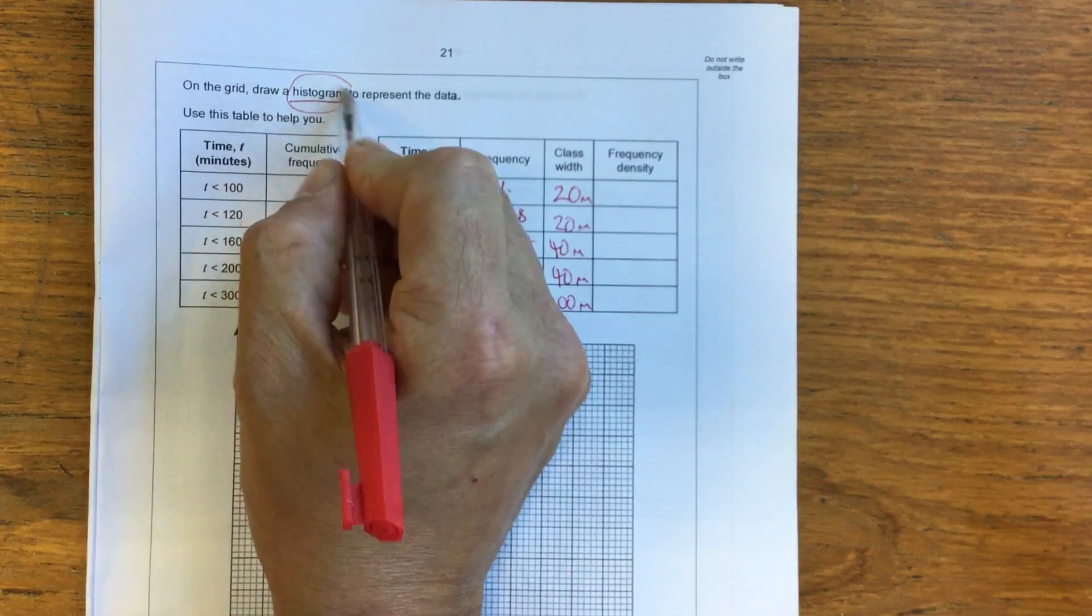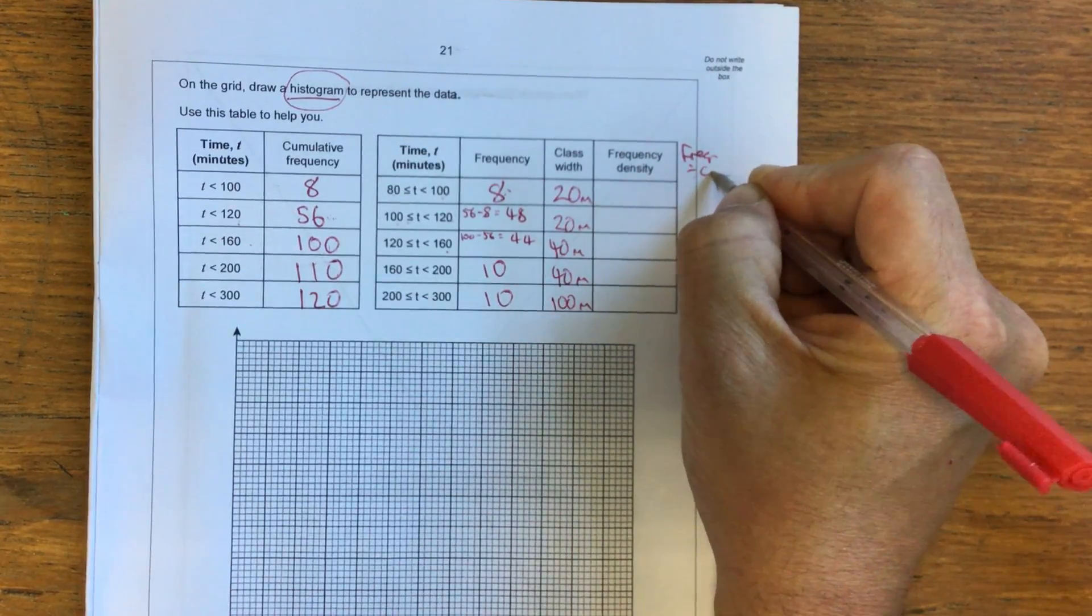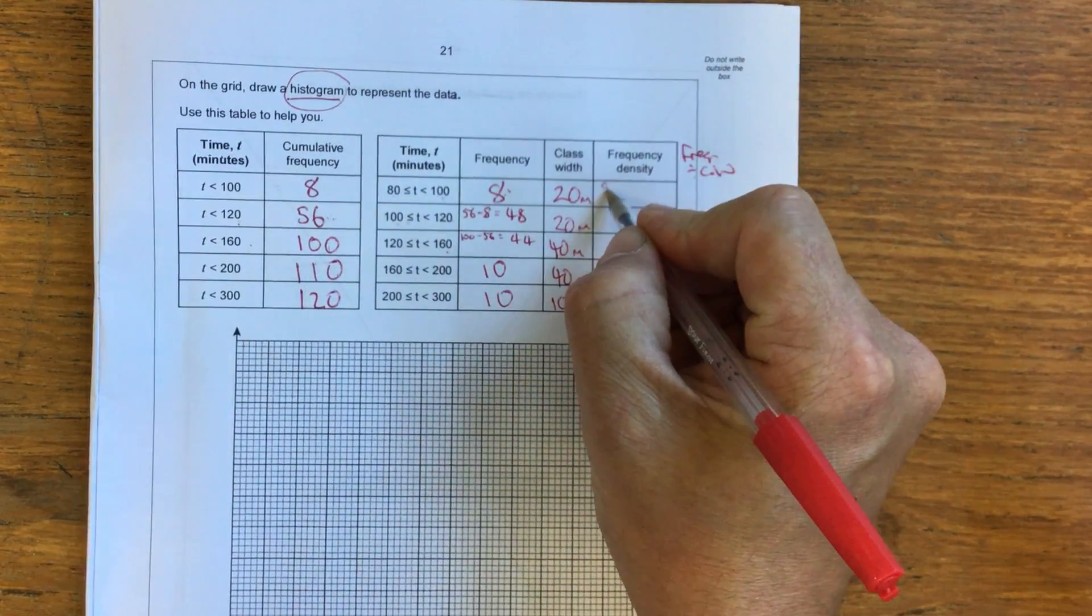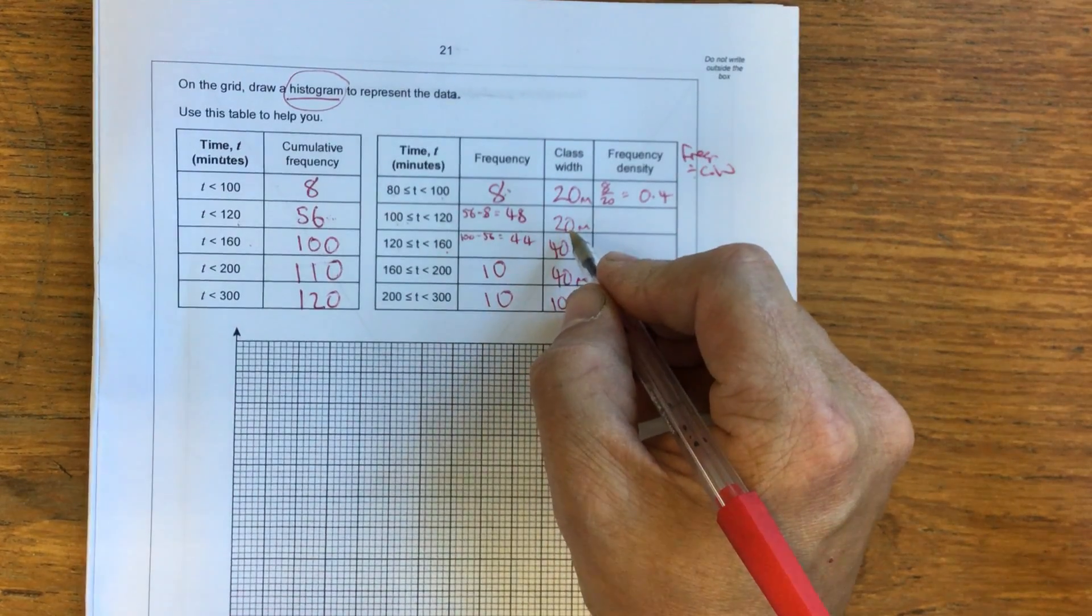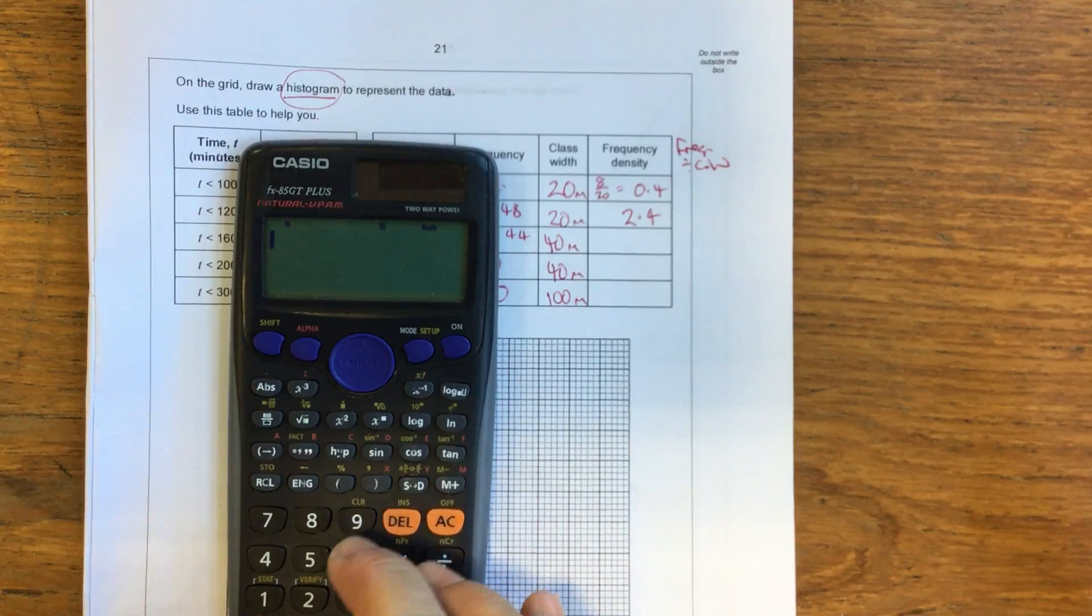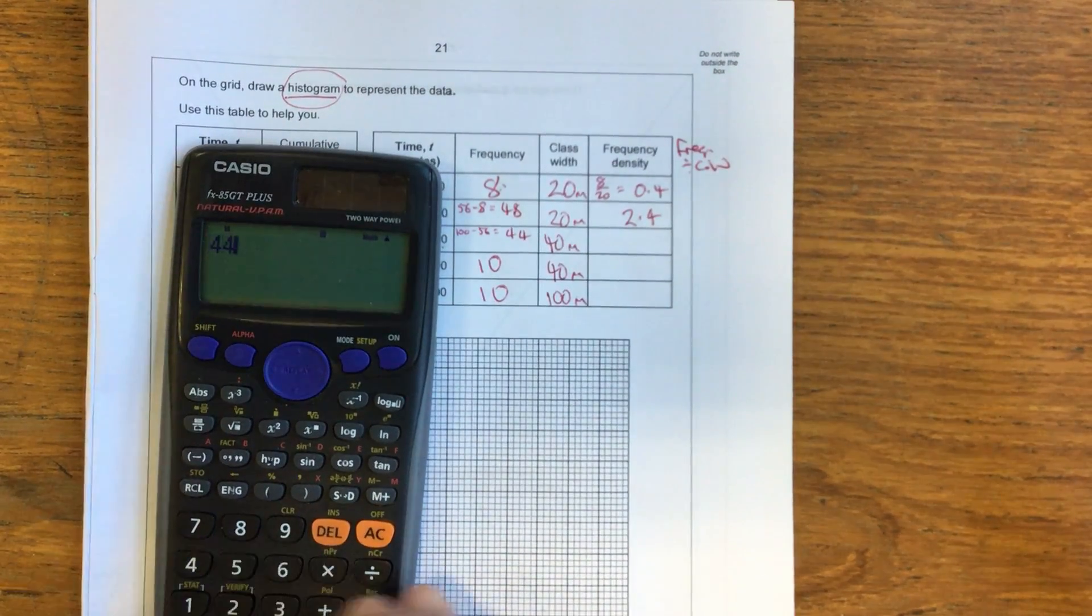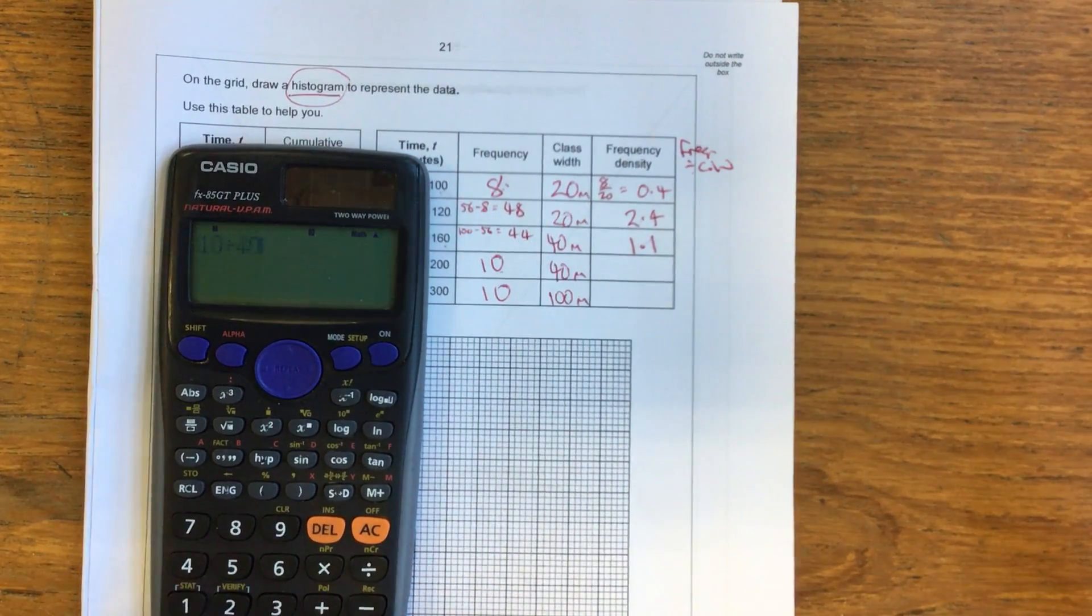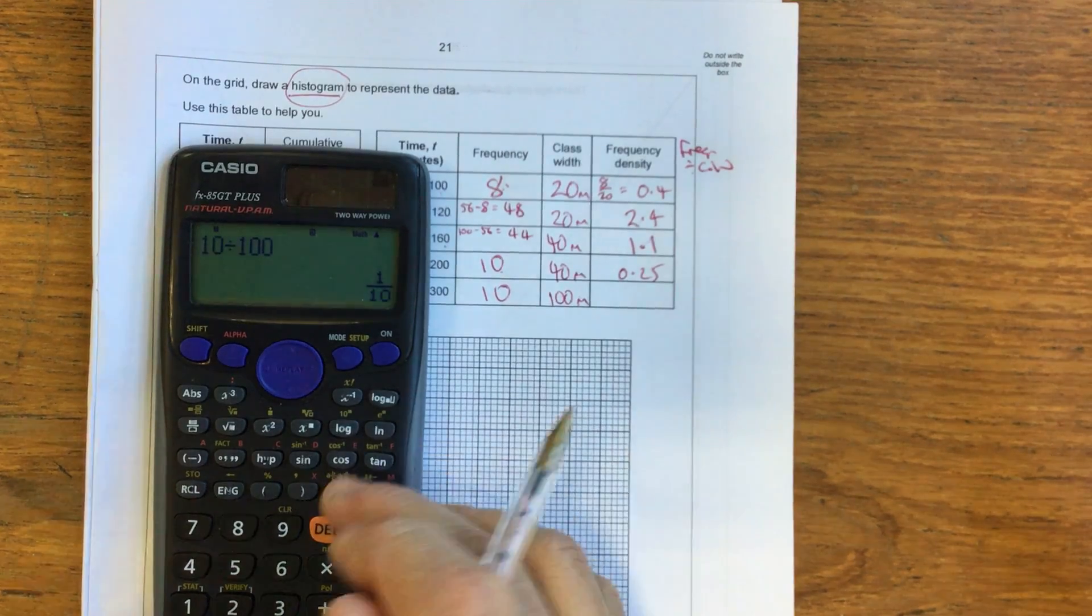Now, frequency density is something that you need to draw a histogram. And you get your frequency density by doing your frequency divided by your class width. Now, be careful. You don't want to write outside your margin when you do an exam, because this won't be included. I'm just doing this for your notes here. So here I'm going to have 8 over 20, which is 0.4. Here I've got 48 over 20, which would be 2.4. Then I've got 44 divided by 40, 1.1. Then we've got 10 divided by 40 equals 0.25. And then we've got 10 divided by 100, 0.1.